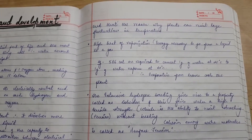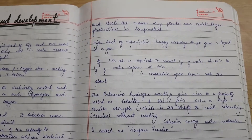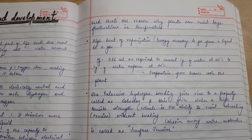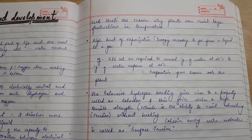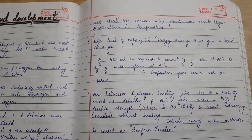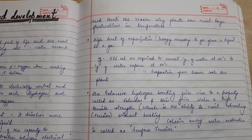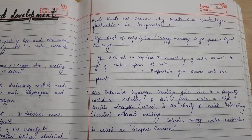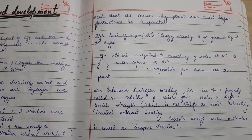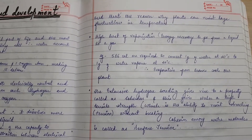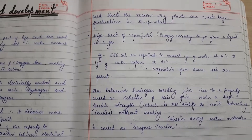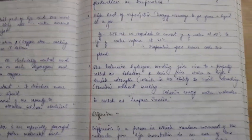High heat of vaporization is another property of water — it is the energy necessary to go from a liquid state to a gas state. When water is in a liquid state, a large amount of energy is required to convert it to a gaseous state. For example, 586 calories are required to convert one gram of water at 20 degrees Celsius to one gram of water vapor at 20 degrees Celsius. Therefore, evaporation from leaves cools the plant.